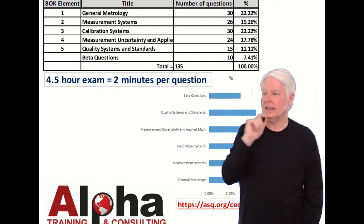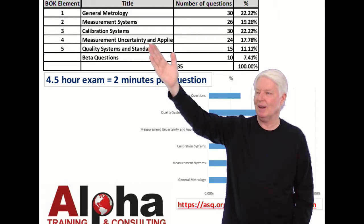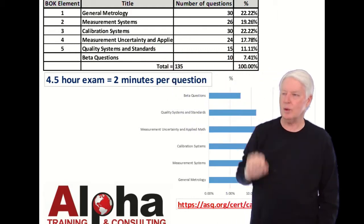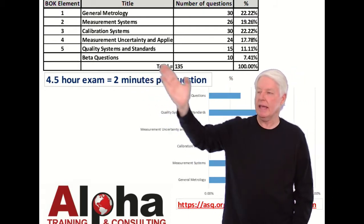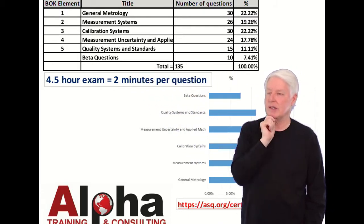Measurement Uncertainty, that's the toughest part of the body of knowledge right there. 24 questions. Quality Systems and Standards, 15, and they give you beta questions, 10 of those.